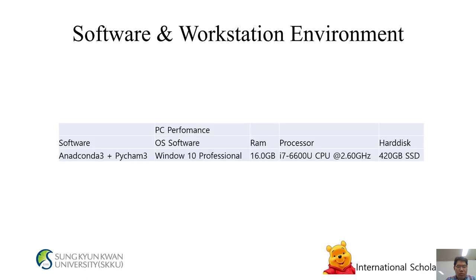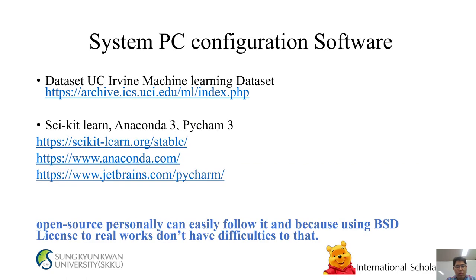Software and hardware environment: PC performance. Software: Anaconda 3, Photoshop. OS: Windows 10 Professional. RAM: 60 GB. Processor: Intel Core i7-6600 CPU at 2.60 GHz. Hard disk: 420 GB SSD. Dataset used from UCI machine learning repository. Tools: Scikit-learn, Anaconda 3, PyCharm. Operators can easily follow it using BSN license, without difficulties.